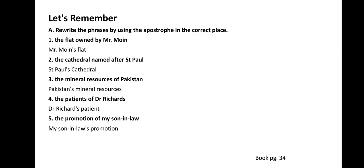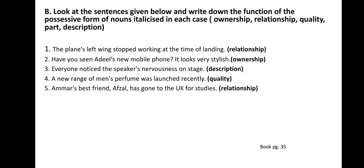Now moving to the next exercise, exercise number B. Look at the sentences given below and write down the function of the possessive form of nouns italicized in each case: ownership, relationship, quality, part, and description.